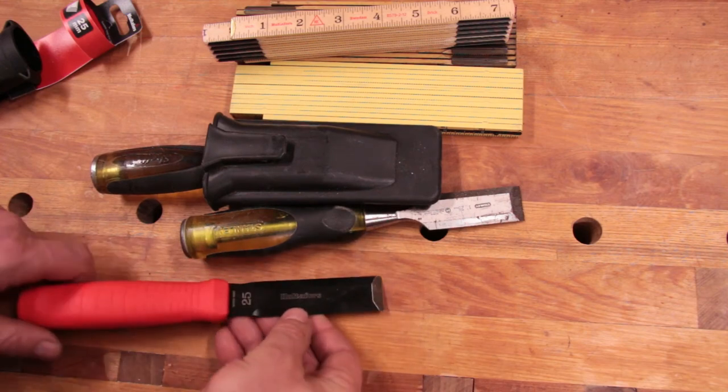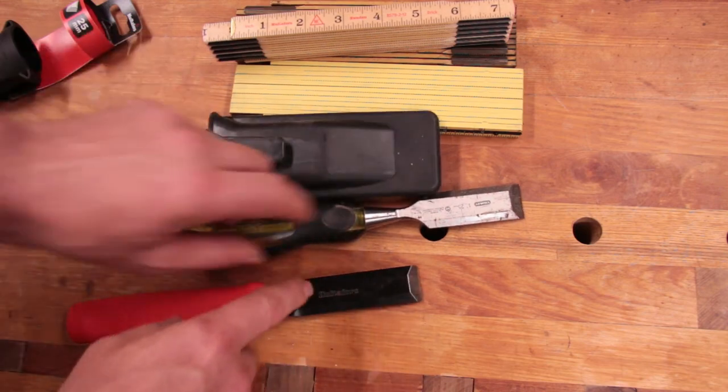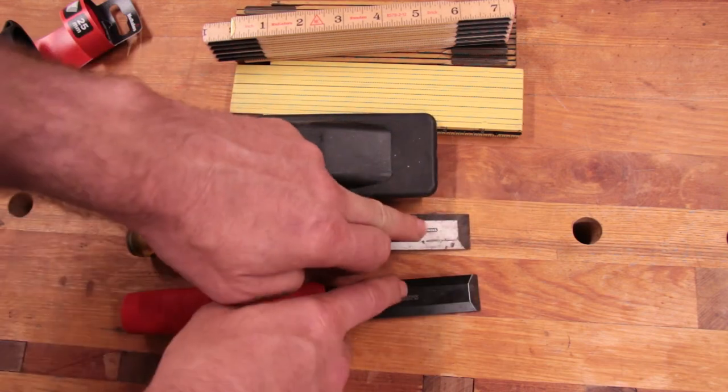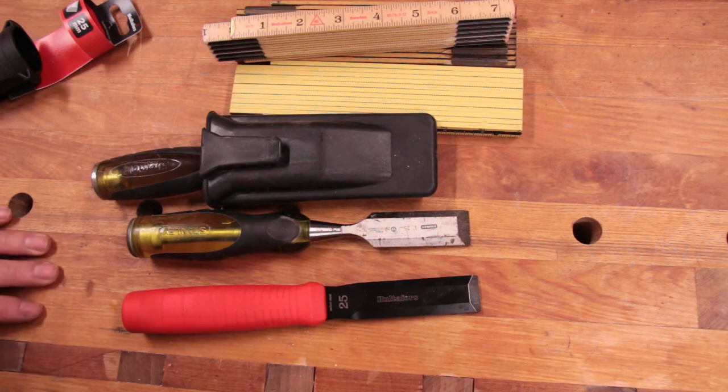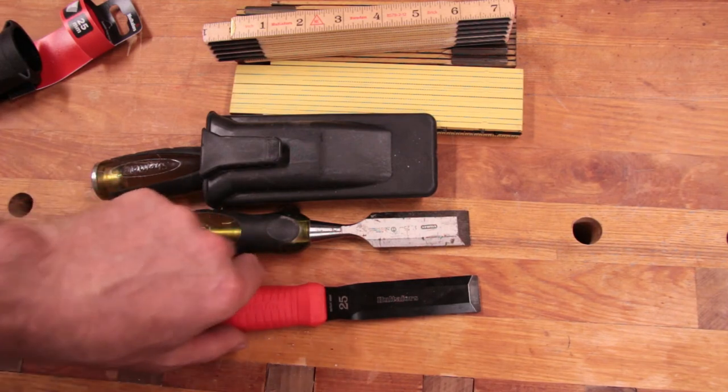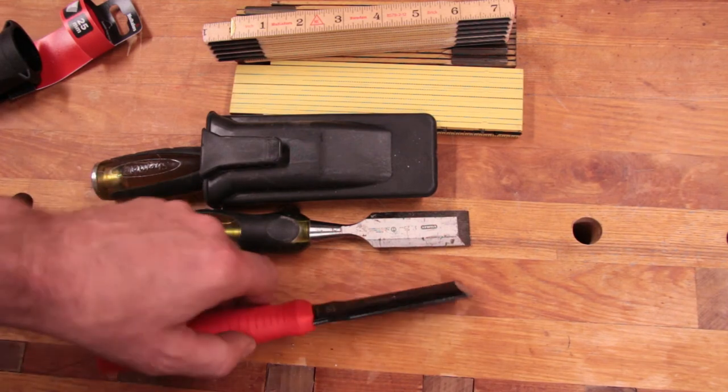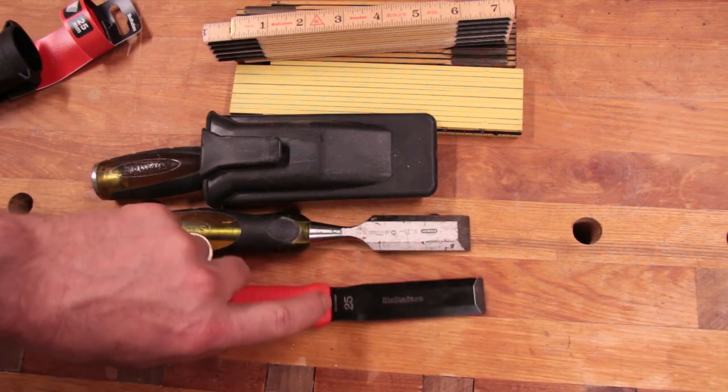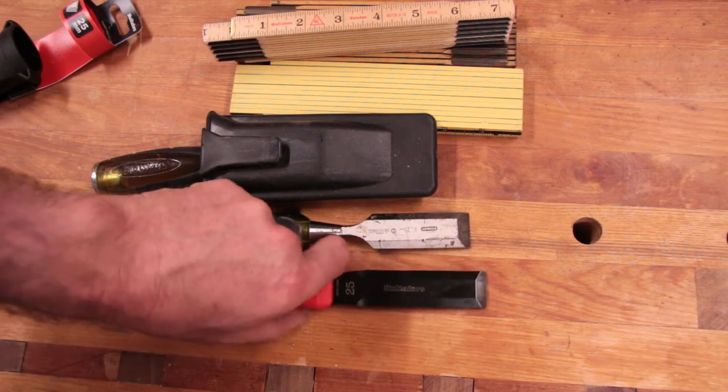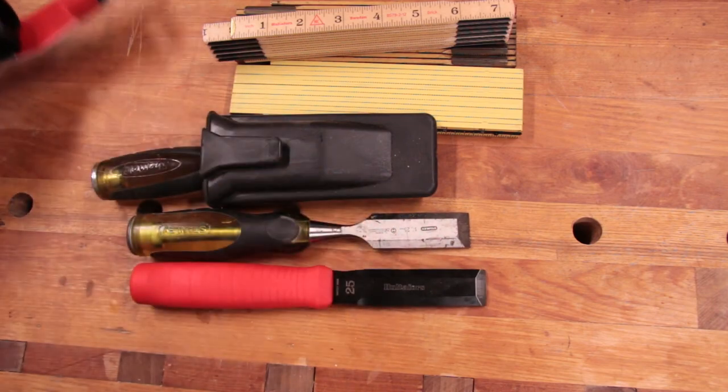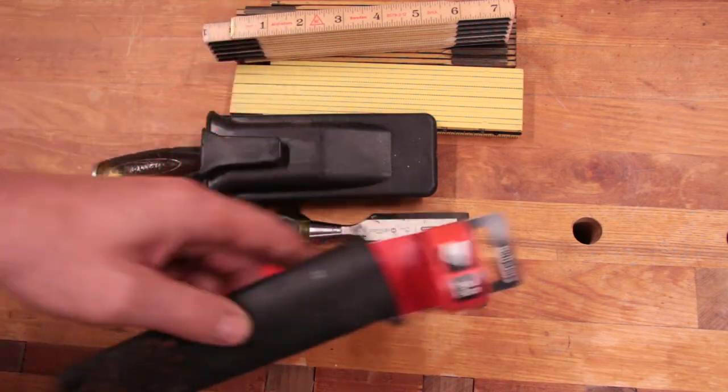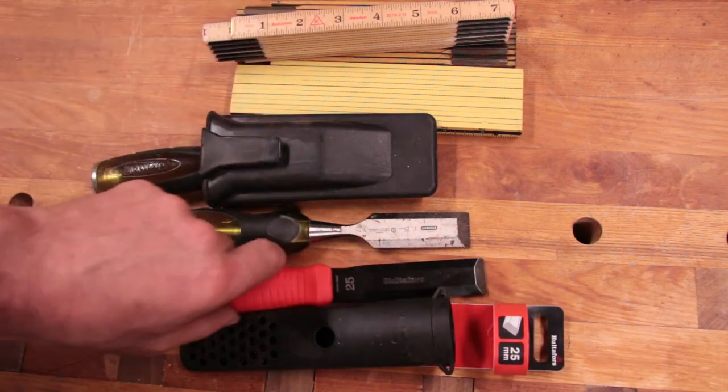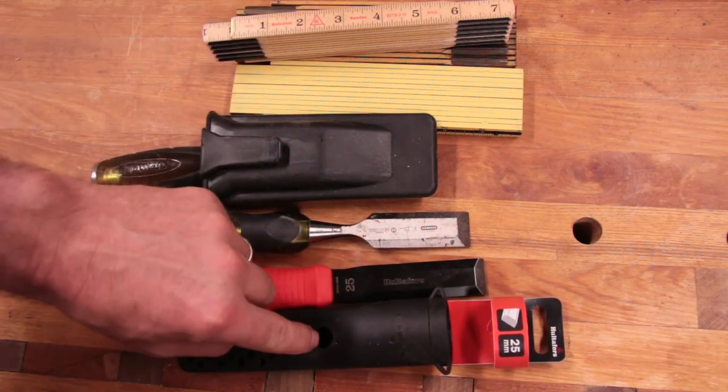And compare it to these two as far as edge holding goes, and just general use. Initial impressions are good for this. I like the carbon steel better than the stainless steel. I like that it comes with this nice sheath that it fits in nicely. And you can see the 25 through the hole in the sheath.